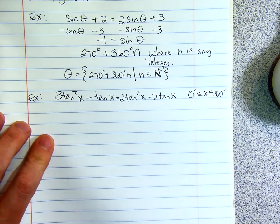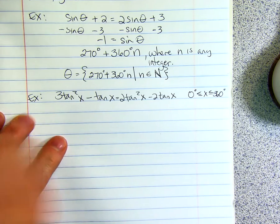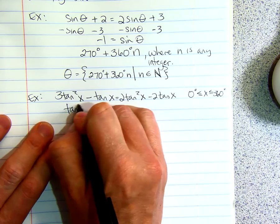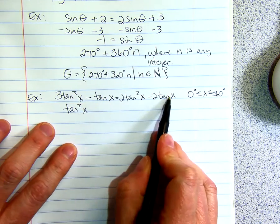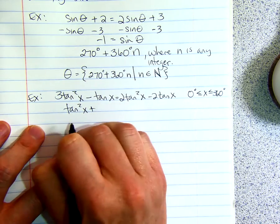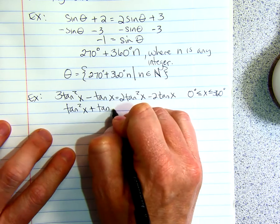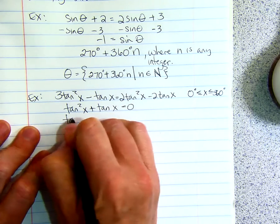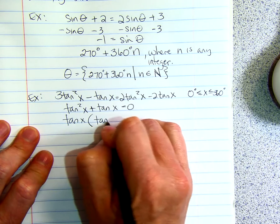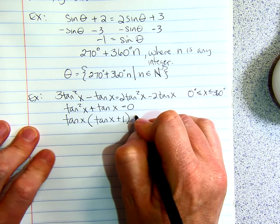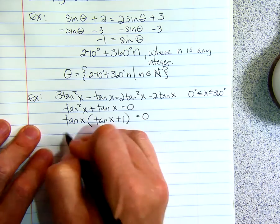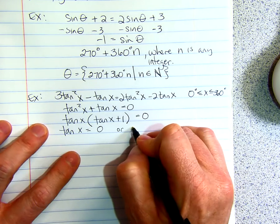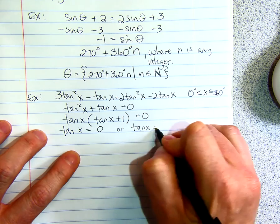So we need to get it in quadratic form. So we subtract 2 tangent squareds. We get tangent squared X. We add 2 tangents. Tangents of X. So tangent X is going to equal 0. You can factor out a tangent X and you get tan X plus 1 equals 0. So basically tangent of X could be 0 or tangent of X could be negative 1.